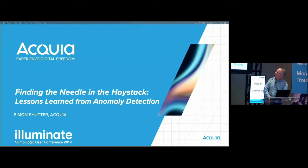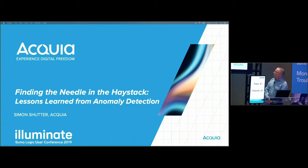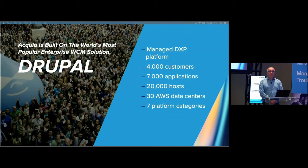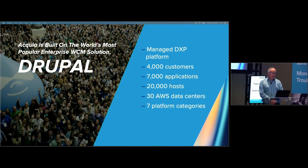So a little bit about Acquia. We provide a digital experience platform with the Drupal content management system at its core. Every customer that hosts with us is basically using Drupal plus one or more other products that we offer. We have about 4,000 customers around the world running a total of 7,000 web applications. We manage 20,000 AWS instances in 30 data centers around the world. And we use Sumo for a variety of things — we send around 1.5 terabytes of log data to Sumo every day.